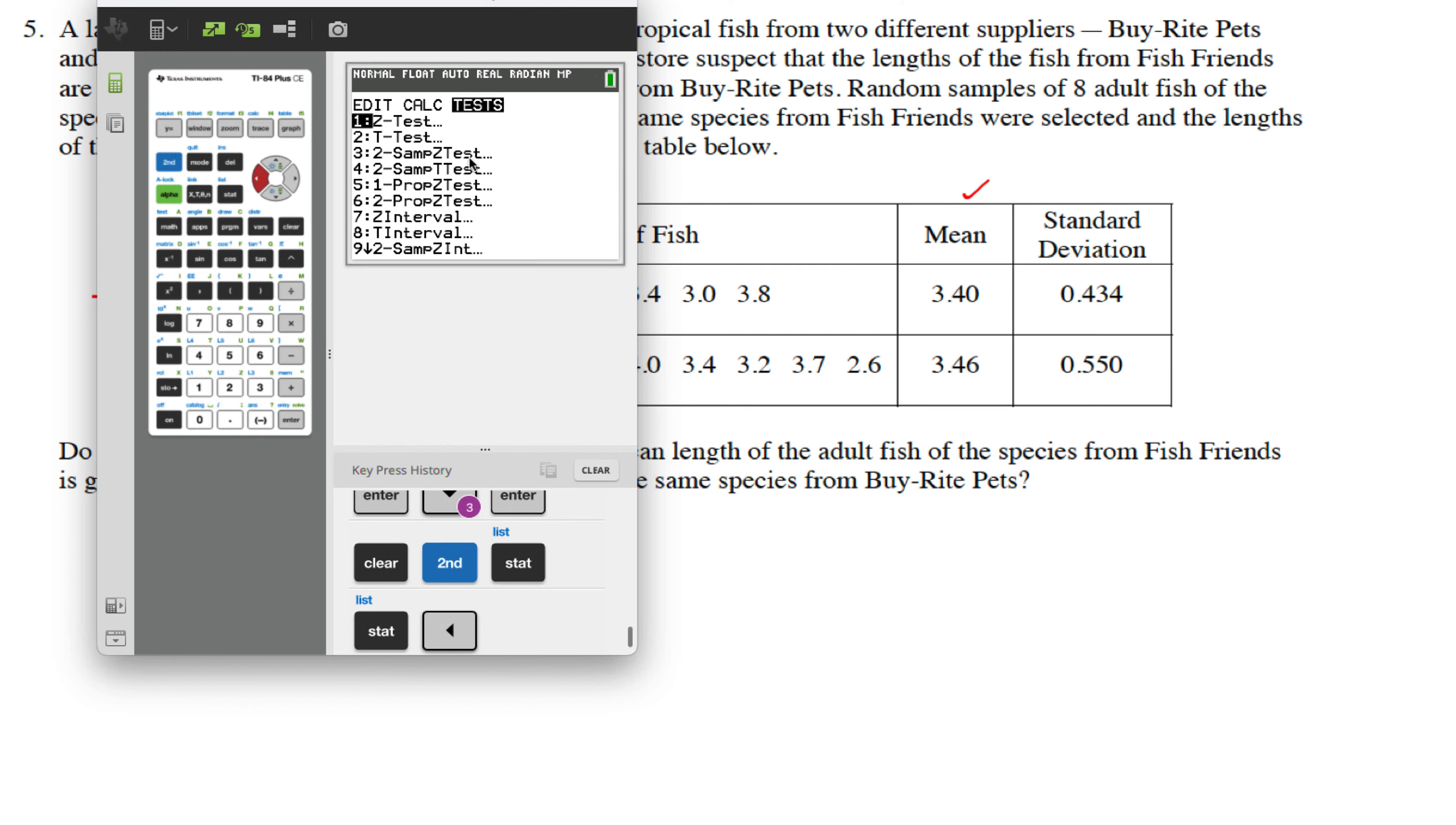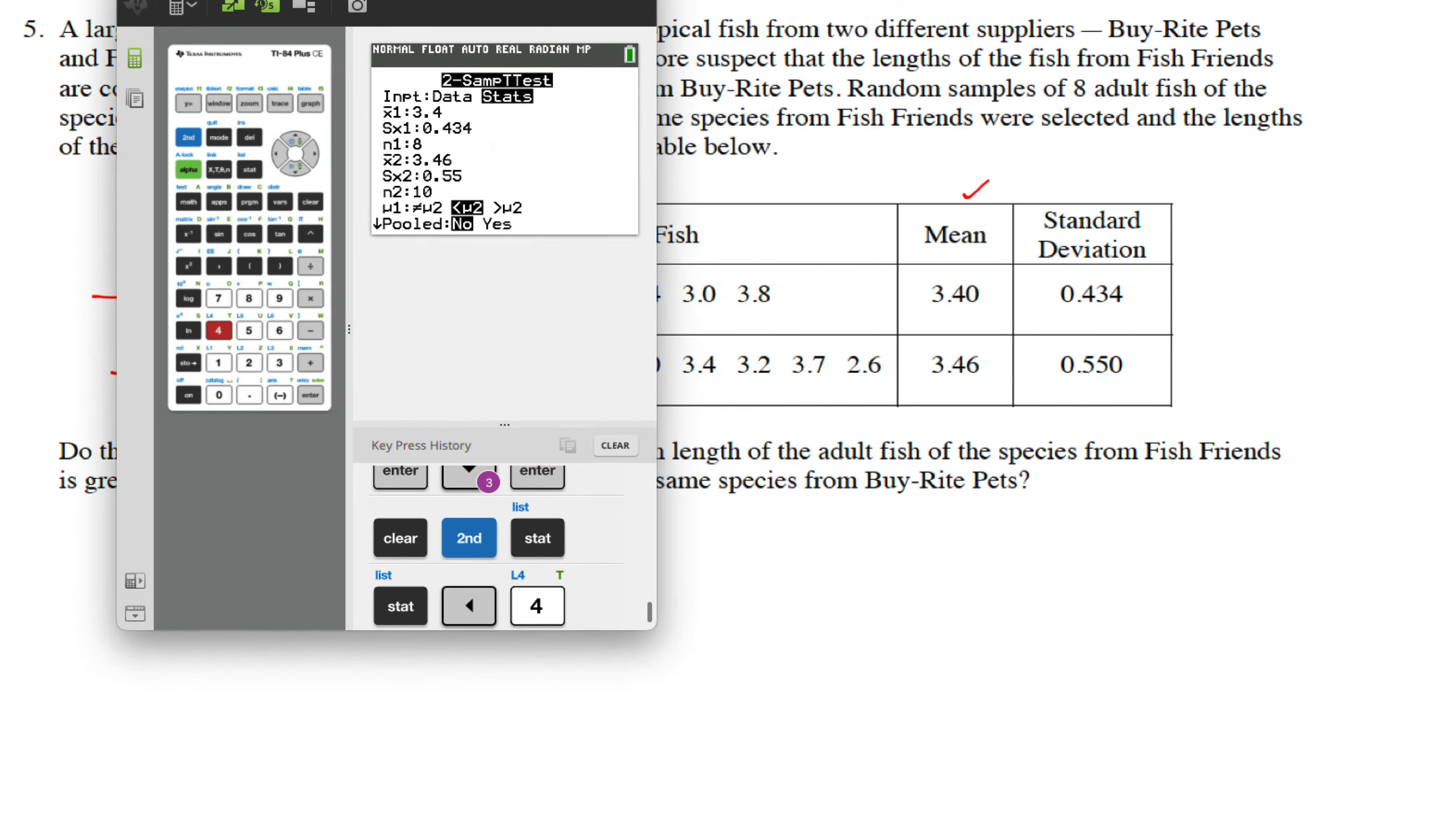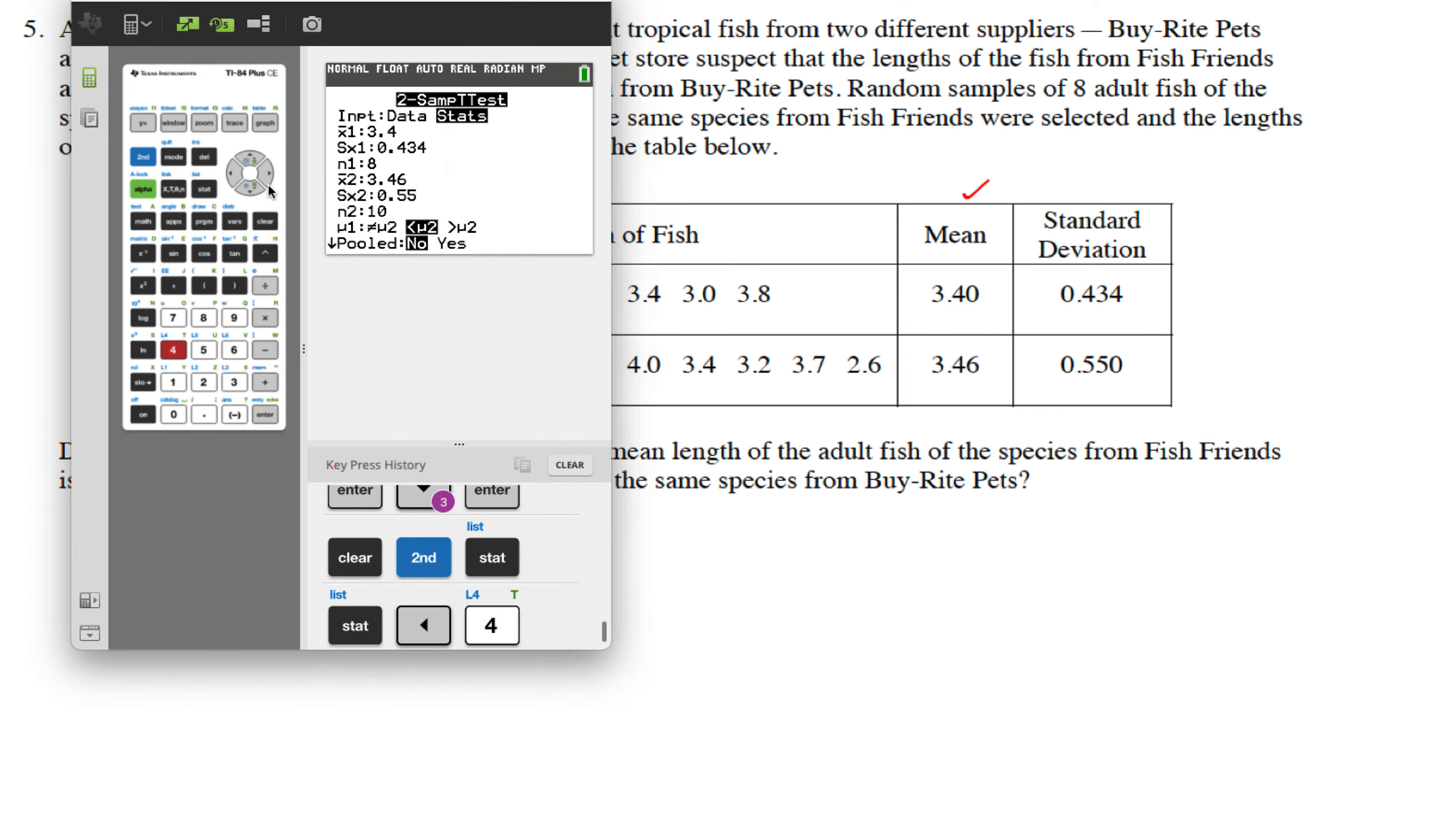This is going to be a two-sample t-test, and then we can go over to the Stats because they give them to you. You can put it all in. You could also type all those numbers into the lists, but you don't need to, so don't waste time doing that. They tell you everything right here. You have eight with a mean of 3.4, standard deviation given. We have ten here. The mean is 3.46, standard deviation.